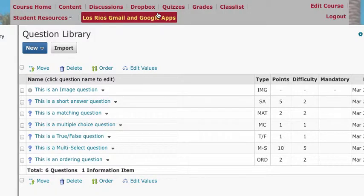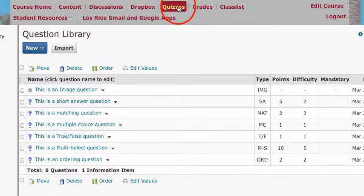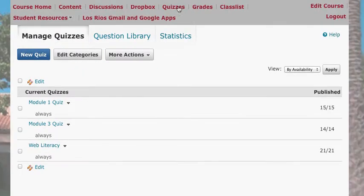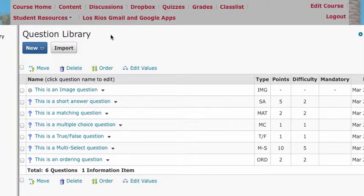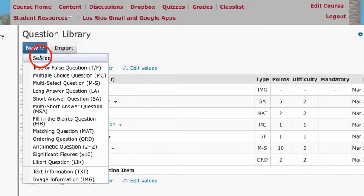This is a short video on how to navigate the question library. To get to it, you would click on Quizzes and then Question Library. Now I'm going to create a section.